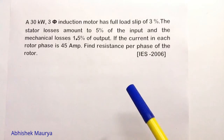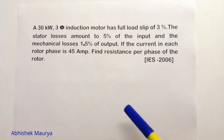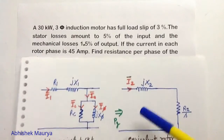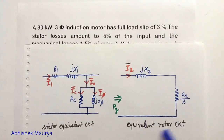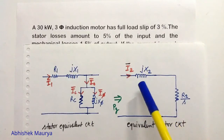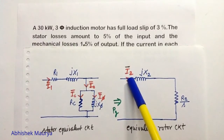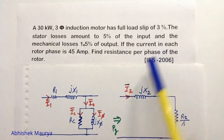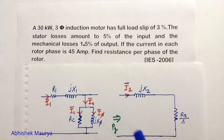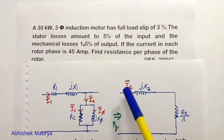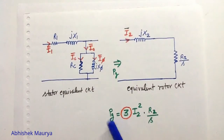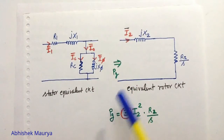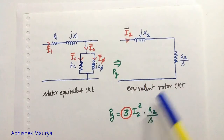If the current in each rotor phase is 45 ampere, find the resistance per phase of the rotor. To solve this problem, I would like to draw the equivalent circuit of the three-phase induction motor. This is the stator equivalent circuit and this one is the rotor equivalent circuit. i2 is the rotor phase current, given as i2 equals 45 ampere. Pg is the rotor input power, or air gap power, and the expression for Pg can be written as i2 squared into r2 upon s.